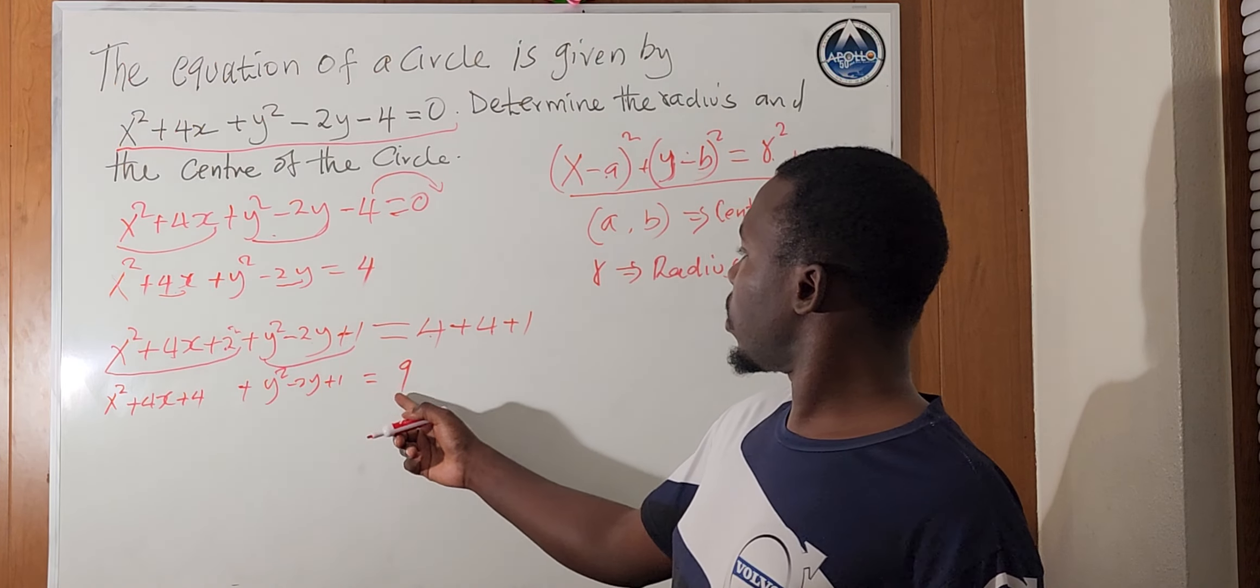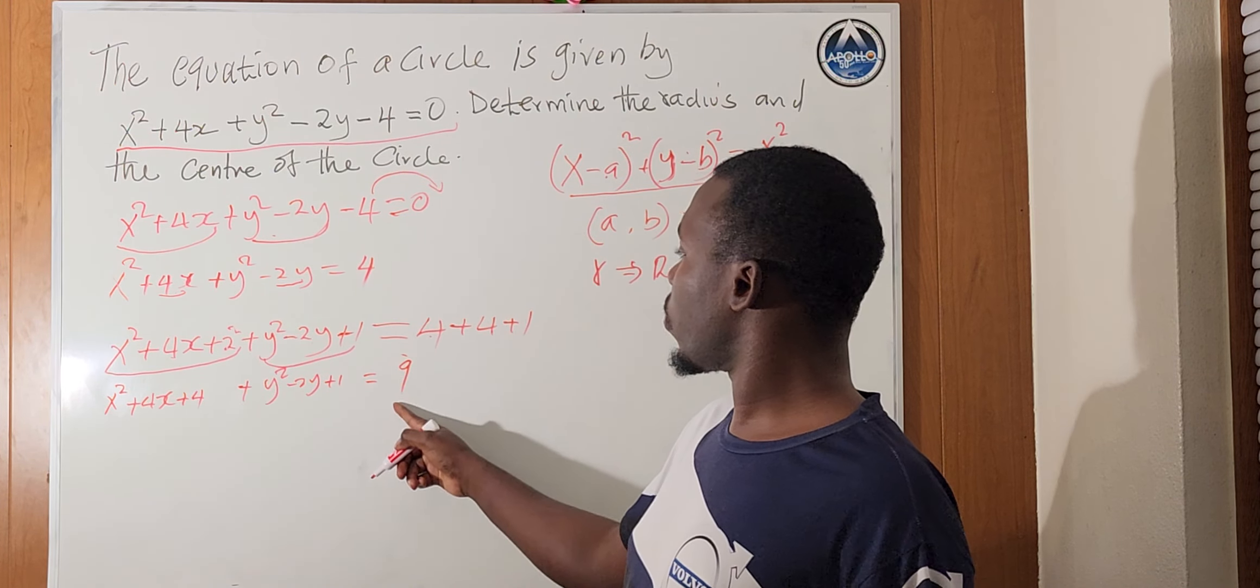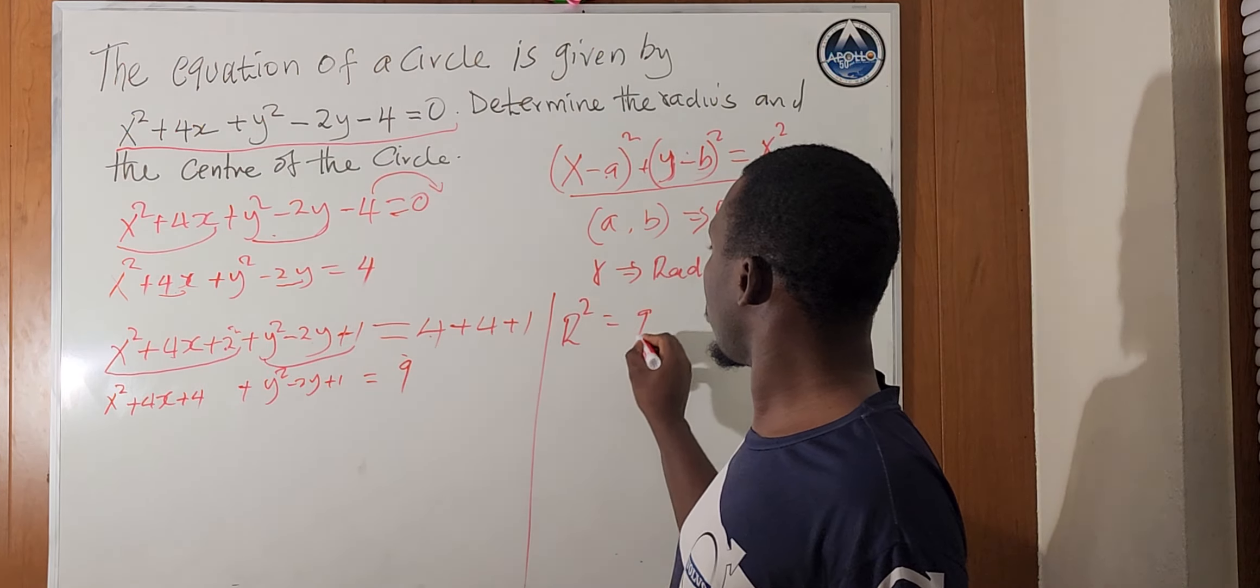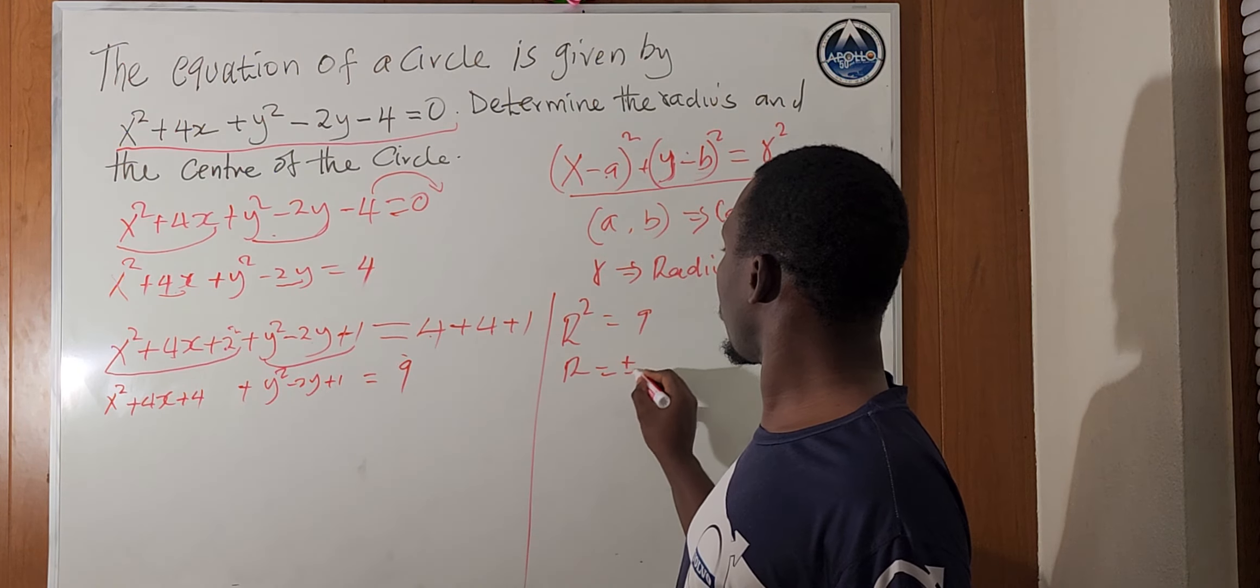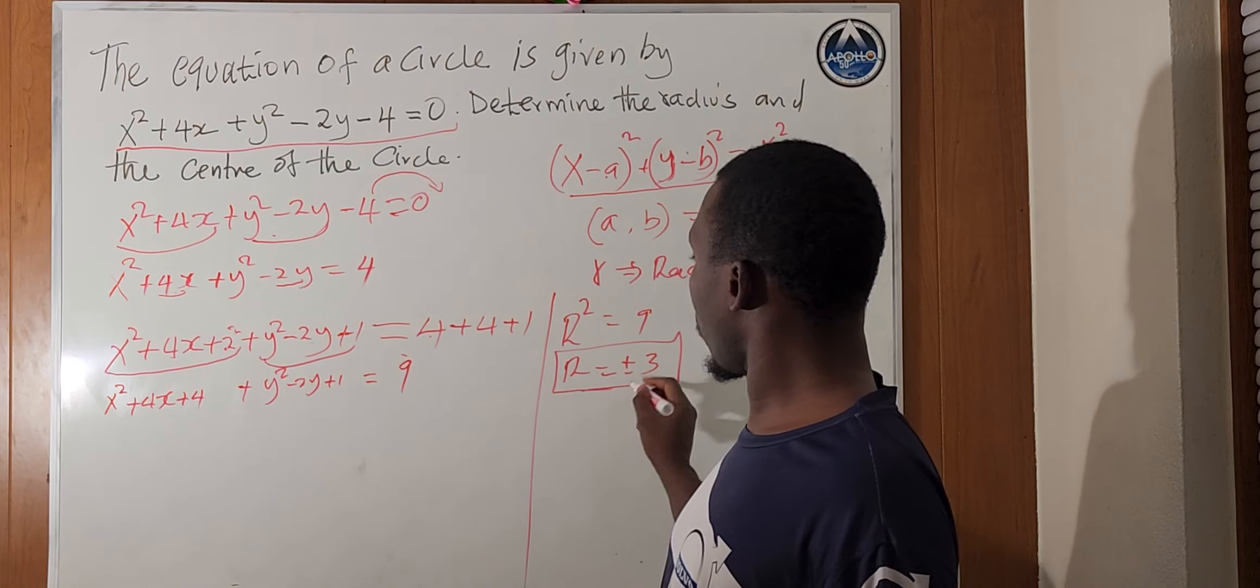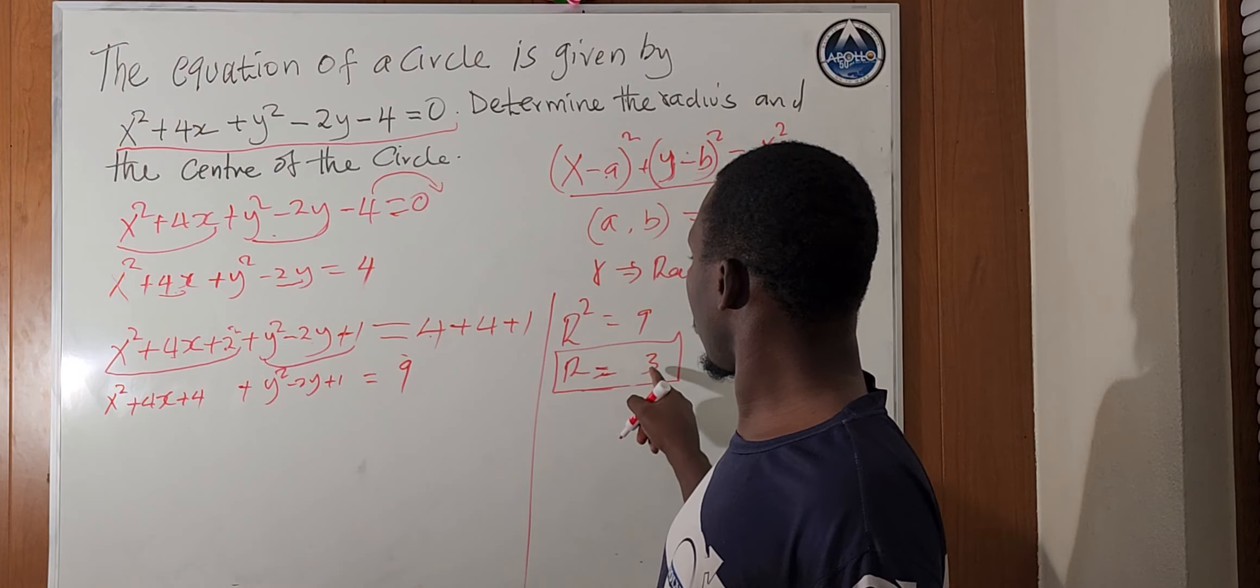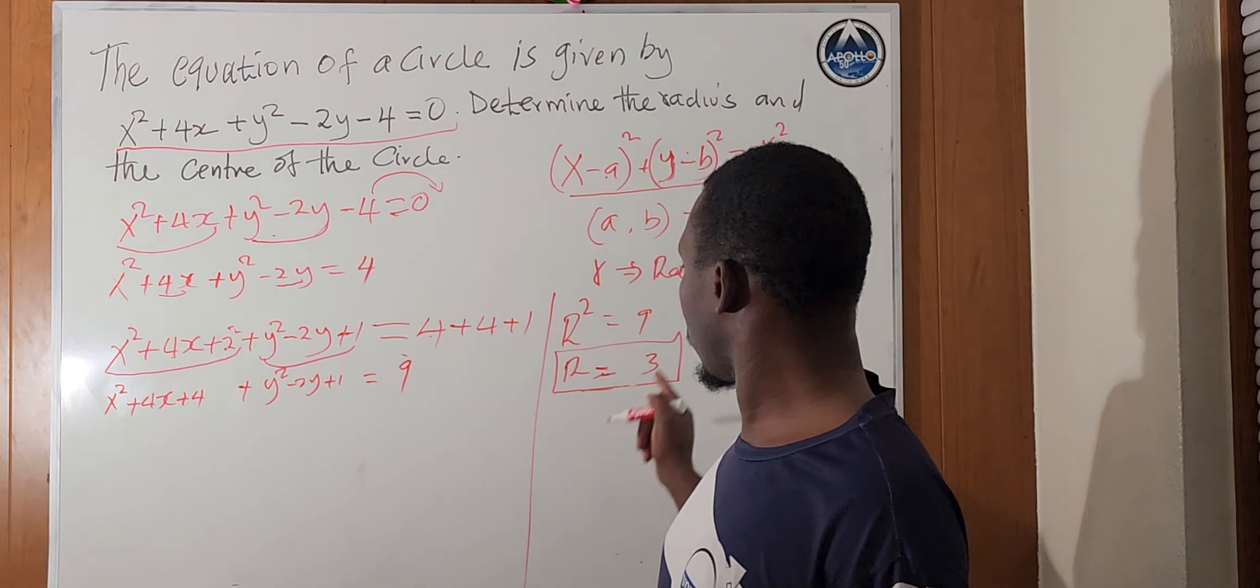So, from here already, you can see this will give us the radius, our radius, but it's squared, so we'll find the square root of this one. So, from here, we can just already say that r squared equals to 9, then our r will be equal to the square root, that's plus or minus 3. So, our radius can be, the radius is just 3 here, since we are just considering the positive part only for that.